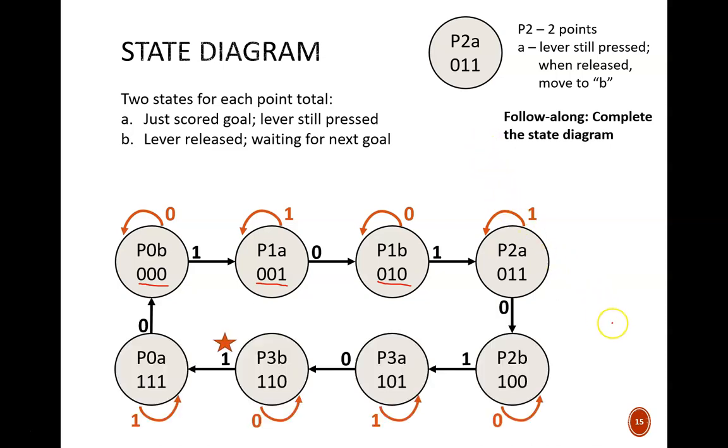Here is the completed state diagram. Notice the regular cycle of state A, then B, then A, then B. The way to leave state A is to release the lever, thus the input is 0. The way to leave state B is to press the lever, thus the input is 1.